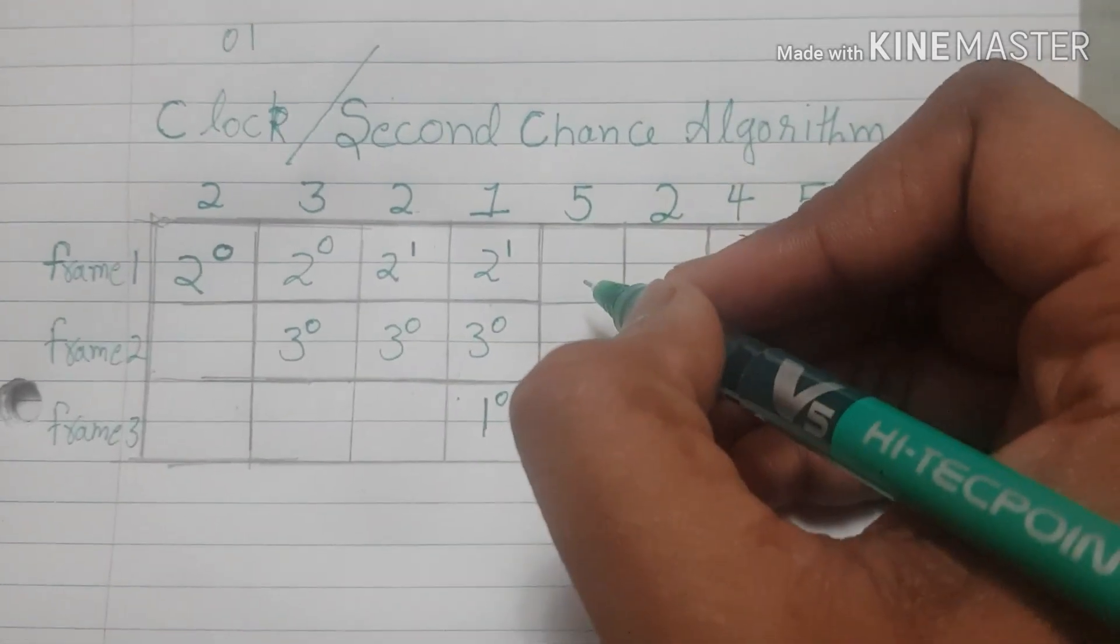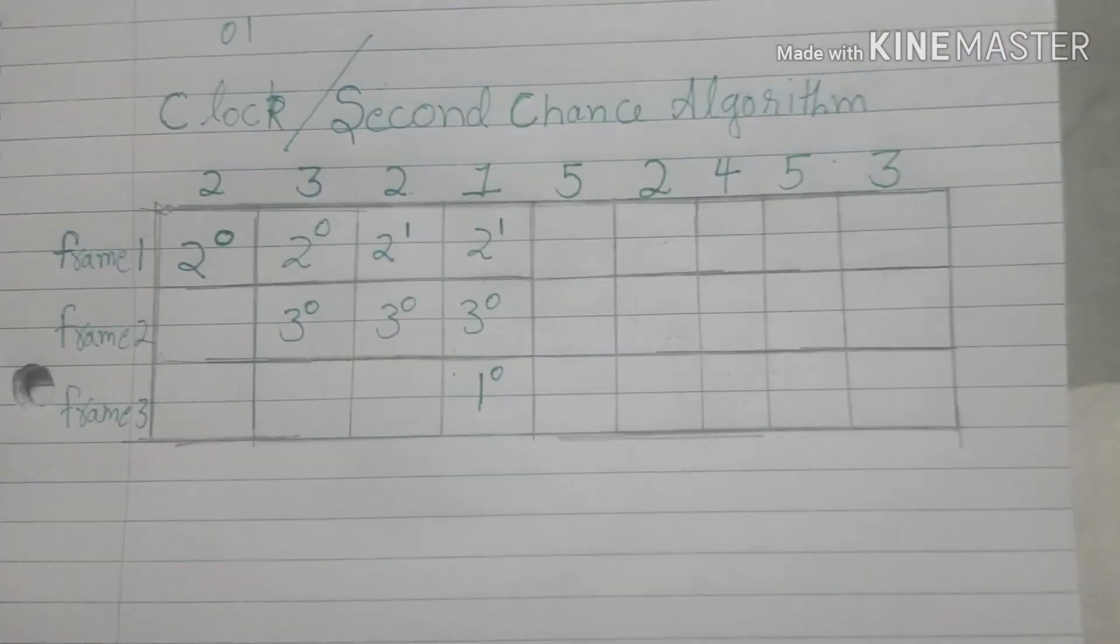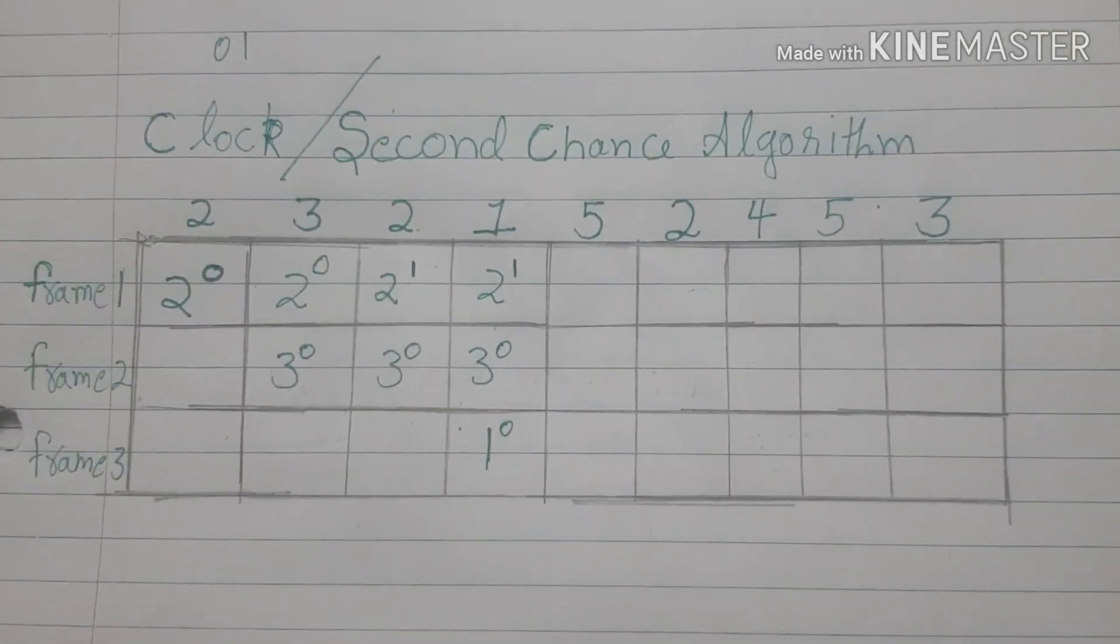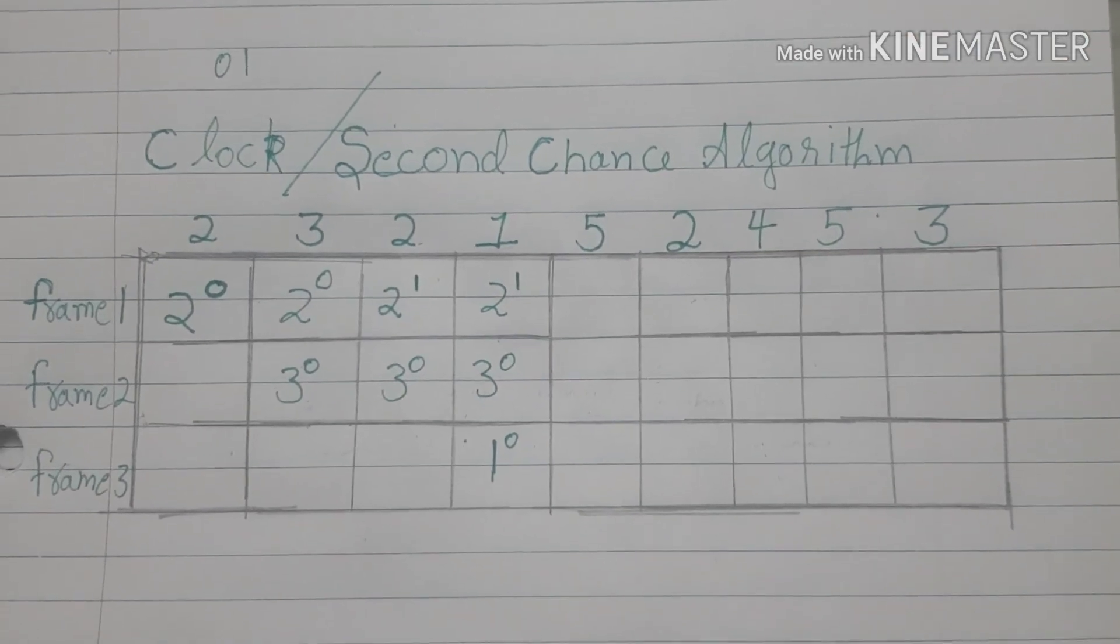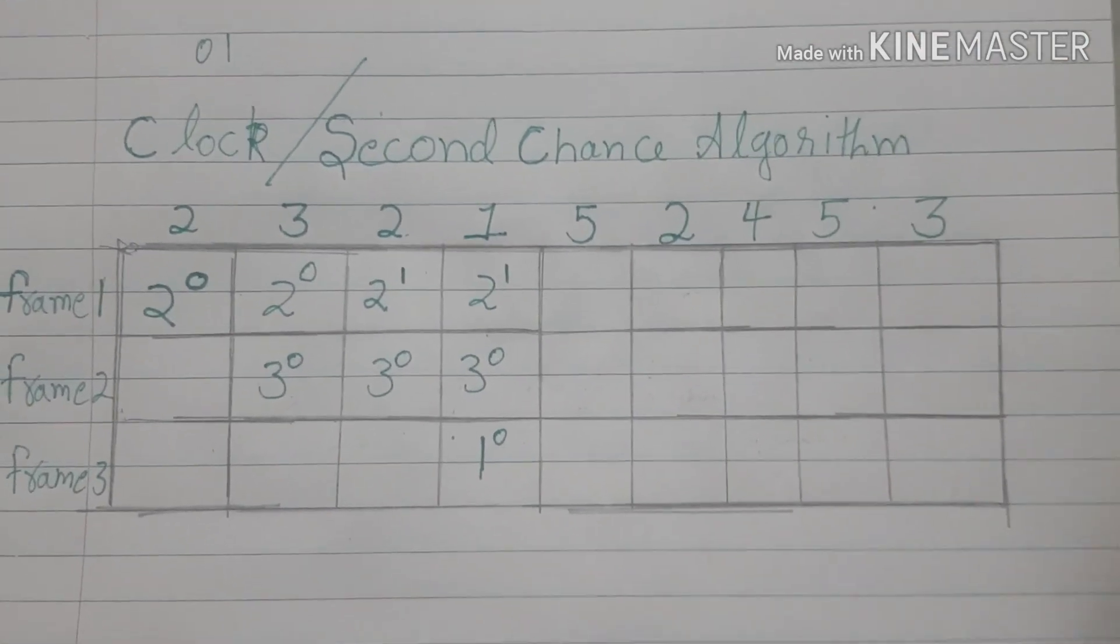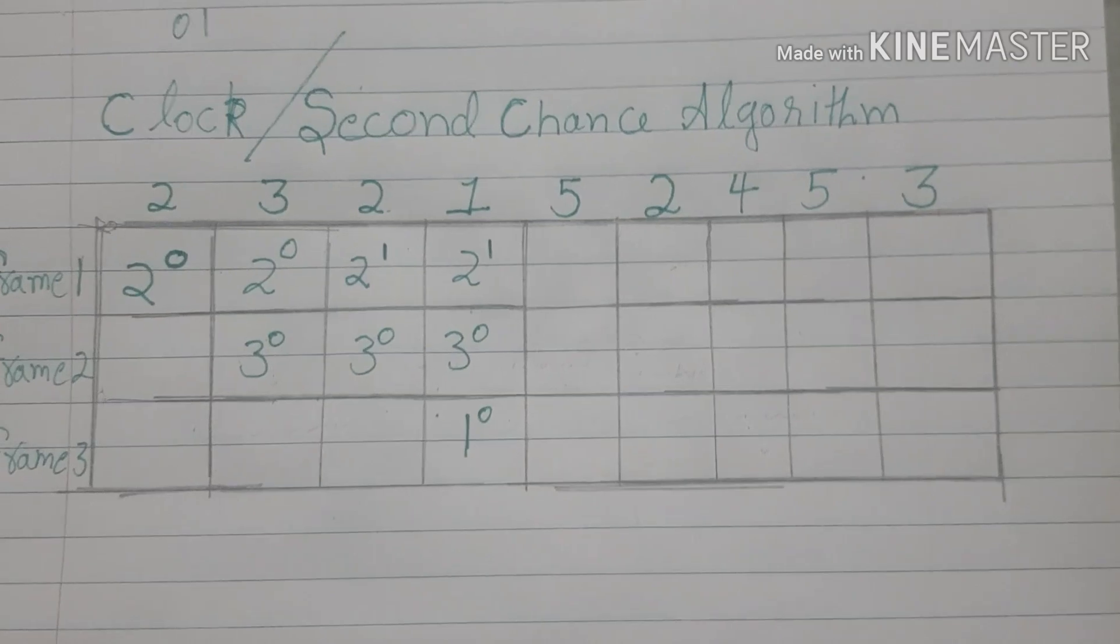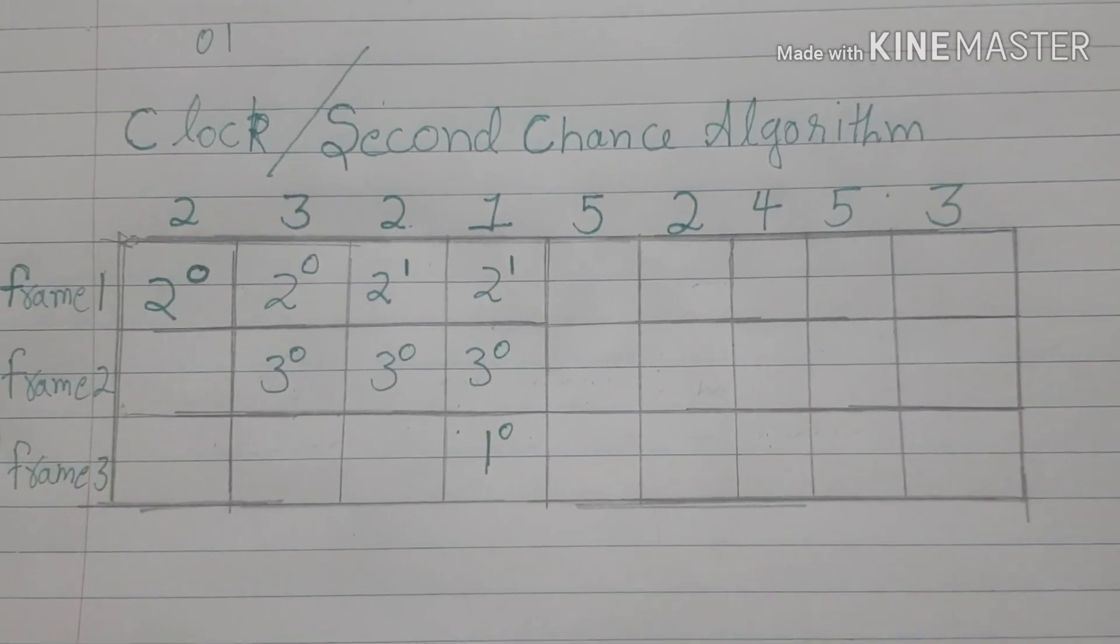Now we have to bring in 5 but there is no frame left for it, so we definitely have to replace one of the frames. Since our frames were full, as I said, we have to follow the basic first in first out principle, easy peasy right.